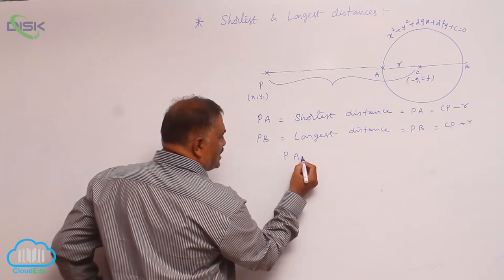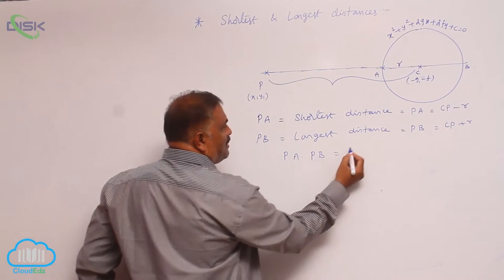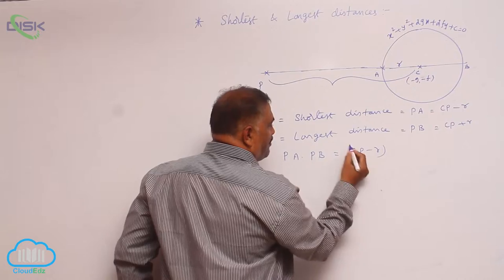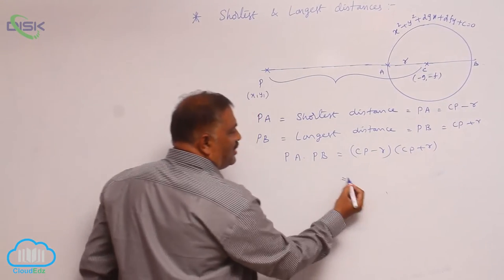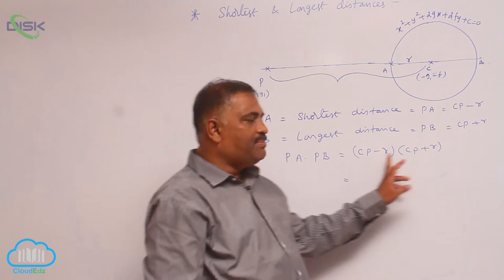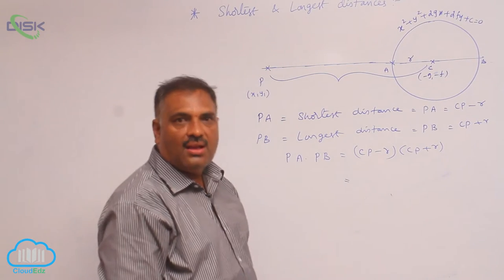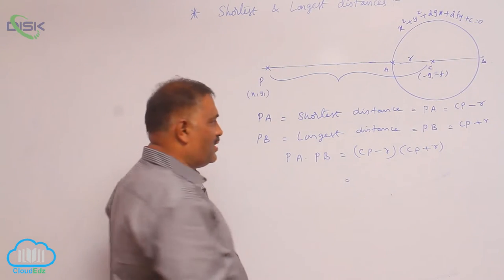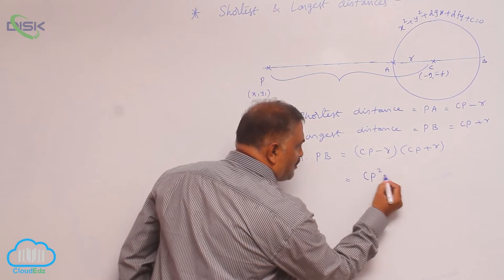Now multiply these two: PA dot PB equals CP minus r into CP plus r. We know that a minus b into a plus b is a square minus b square. So this is CP square minus r square.